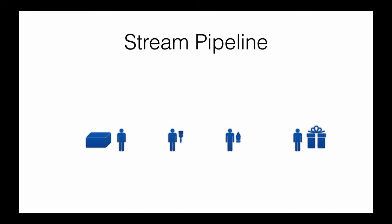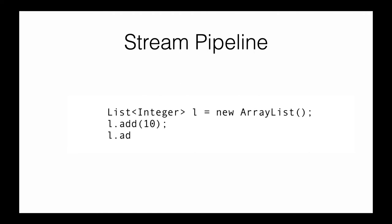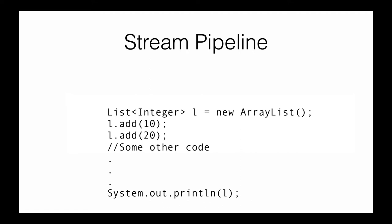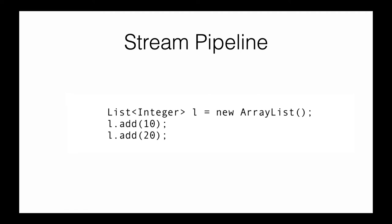A list, on the other hand, requires you to first create an ArrayList and populate the elements. That population already generates the data which is kept in the list, and later you have the option to use that data on the very next line of code or 10 lines below — or in the worst case, you might not use that data at all. This is the second main difference between a stream versus a list or other similar data structures.